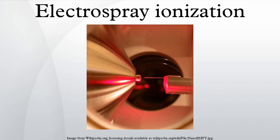In 1882, Lord Rayleigh theoretically estimated the maximum amount of charge a liquid droplet could carry before throwing out fine jets of liquid — this is now known as the Rayleigh Limit. In 1914, John Zeleny published work on the behavior of fluid droplets at the end of glass capillaries and presented evidence for different electrospray modes. Wilson, Taylor, and Nolan investigated electrospray in the 1920s, and Macky in 1931. The electrospray cone was described by Sir Geoffrey Ingram Taylor. The first use of electrospray ionization with mass spectrometry was reported by Malcolm Dole in 1968.